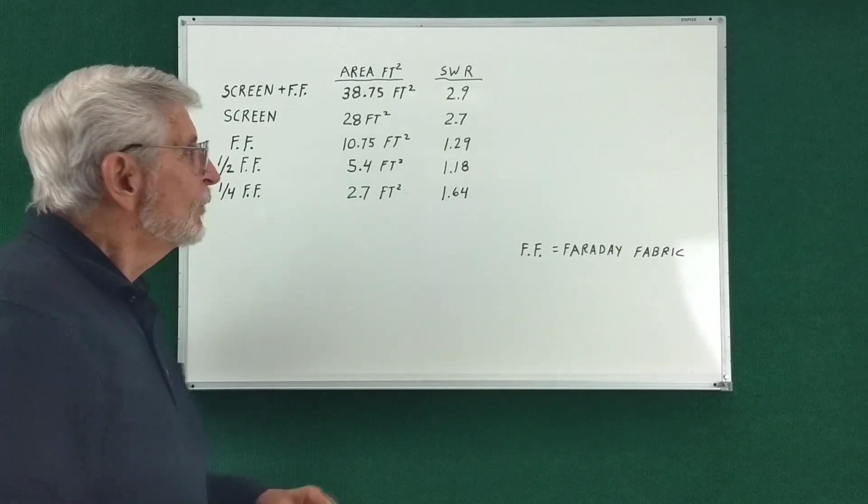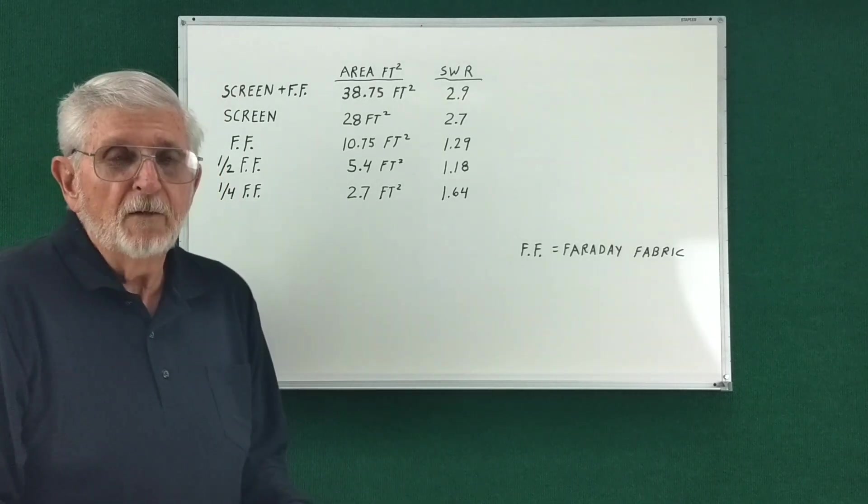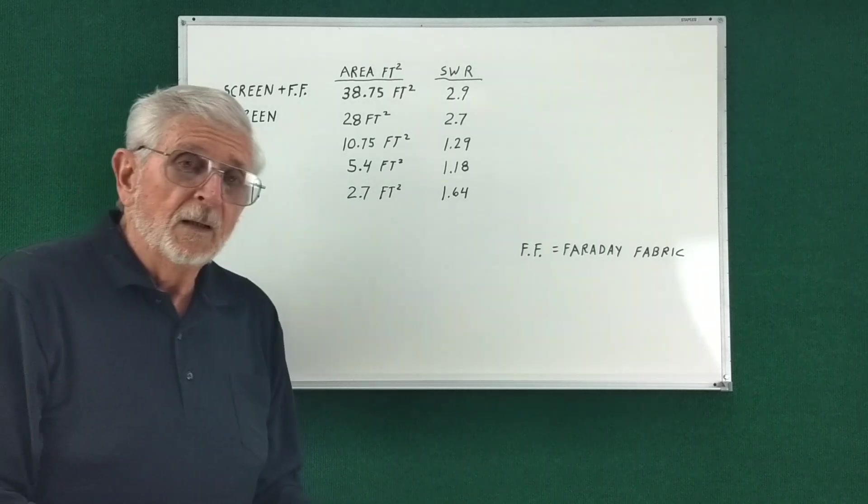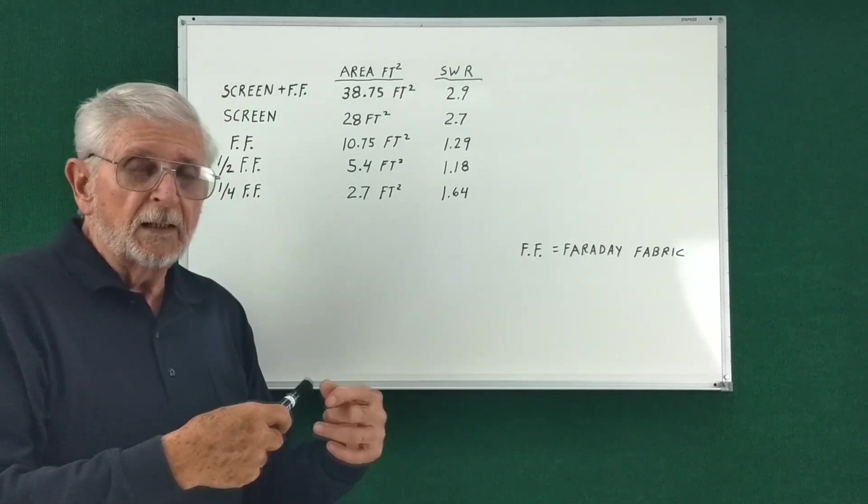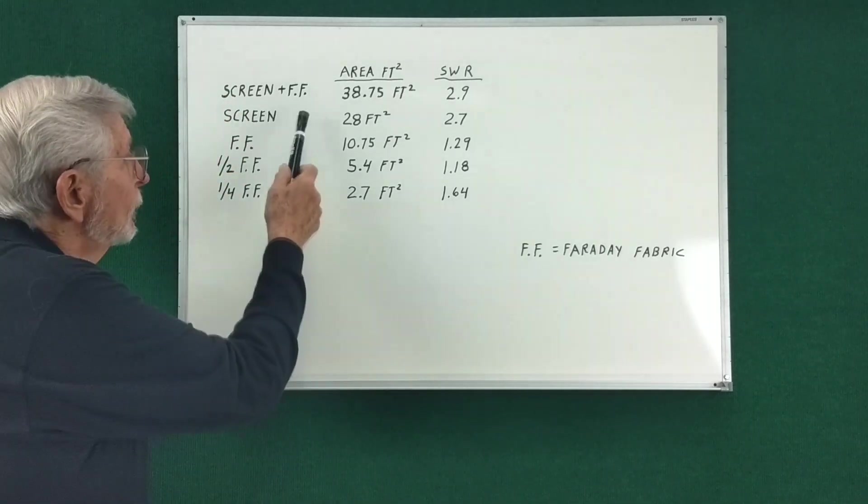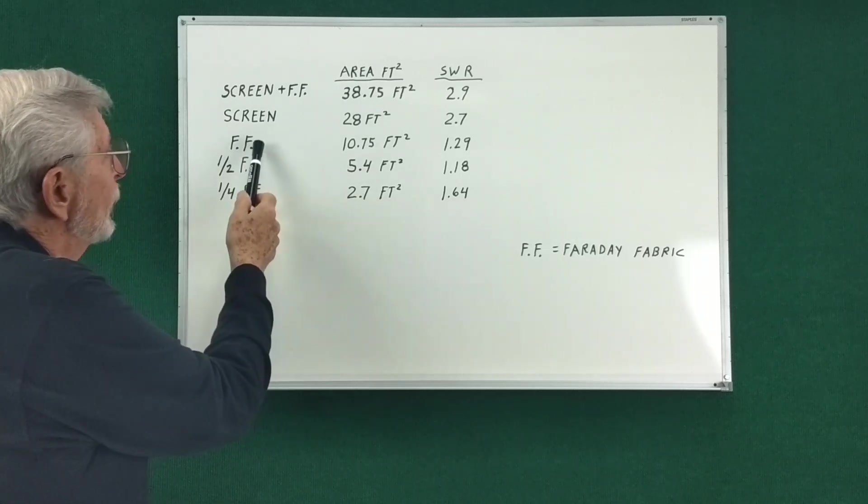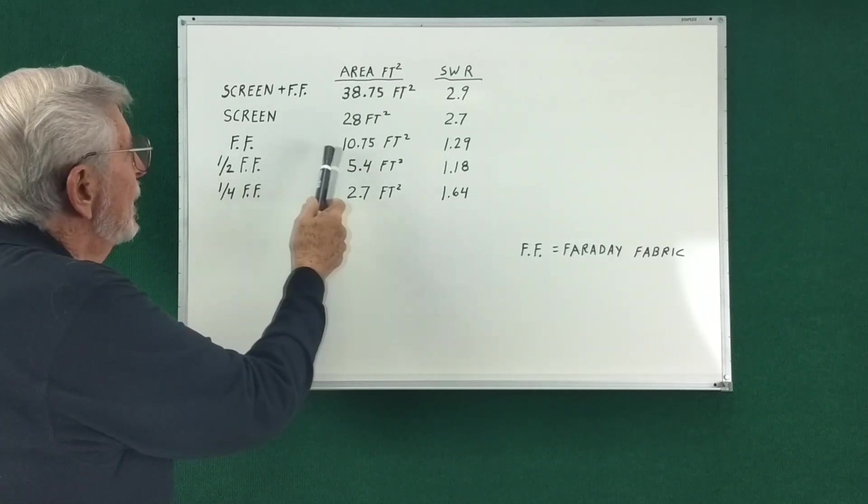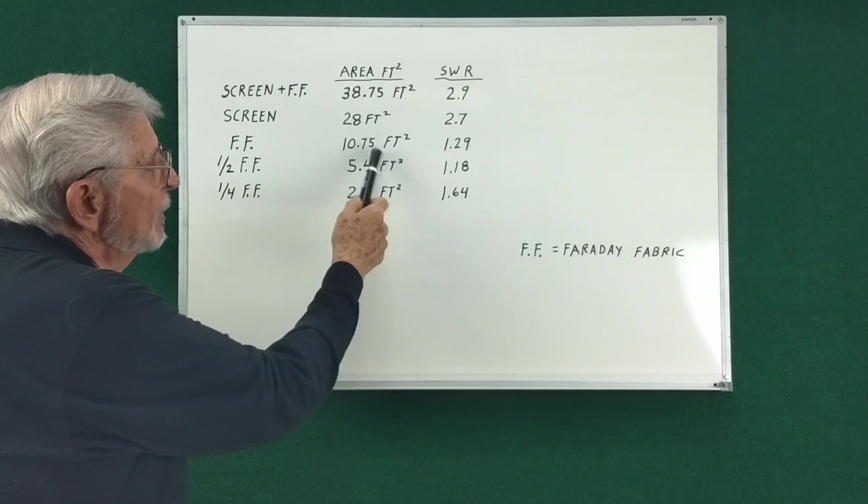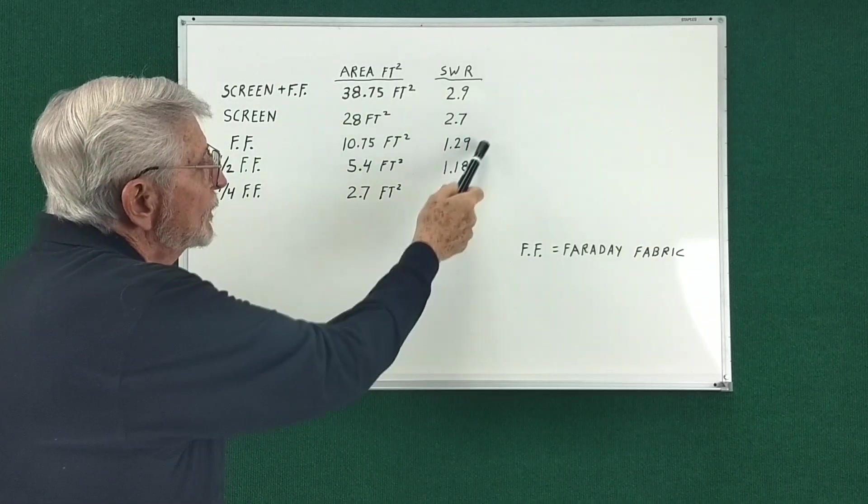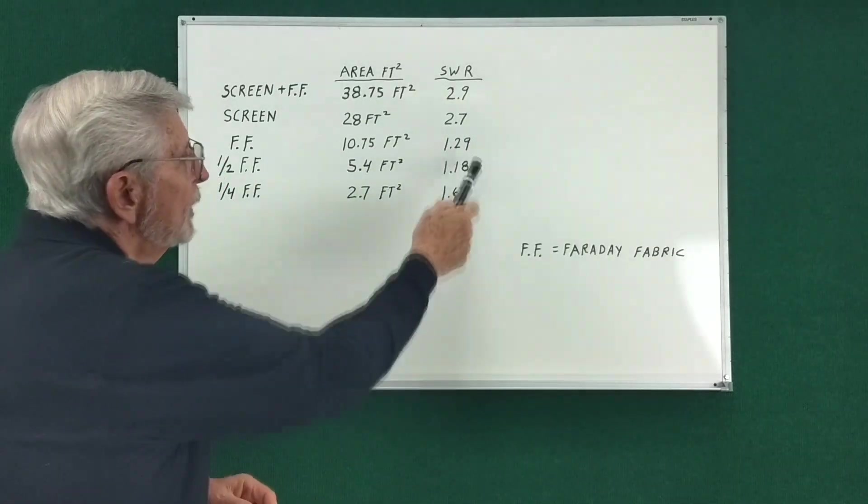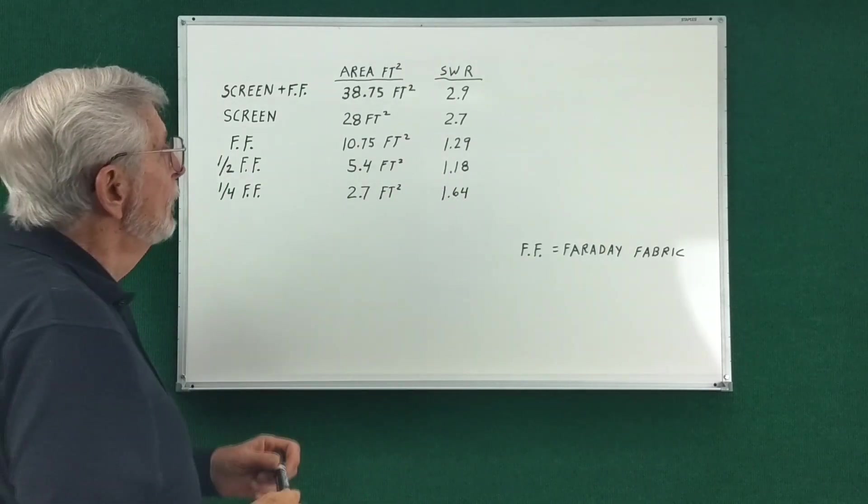This seemed very strange to me, but if adding more made it worse, what would making it less be? So I took the screen away, and with just the Faraday fabric, which was only about 10 square feet, the SWR went down to 1.29, a drastic improvement.